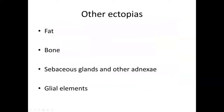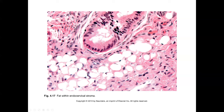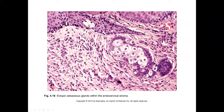There are a few other ectopias that can occur in the cervix: bone, fat, sebaceous glands, and so forth. Here's an endocervical gland with surrounding stromal microcystic lipocytes representing ectopic fat. Another finding that can occasionally be seen is sebaceous ectopia — sort of a dermoid cyst type of thing without the cystic component — and that's again a completely benign finding.